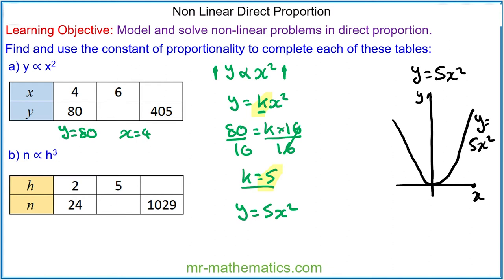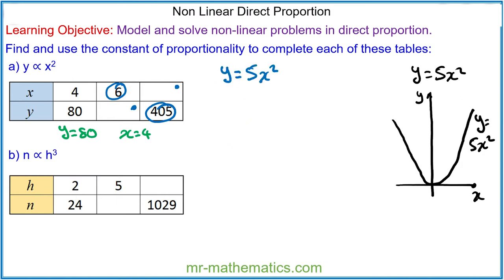Now we're going to use our model to find the value of y when x is equal to 6, and the value of x when y is equal to 405. We're going to substitute in x is equal to 6. So we have y is equal to 5 times 6 squared, which is 36, giving y is equal to 180. So when x is equal to 6, y is 180.